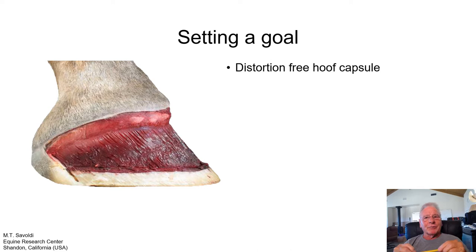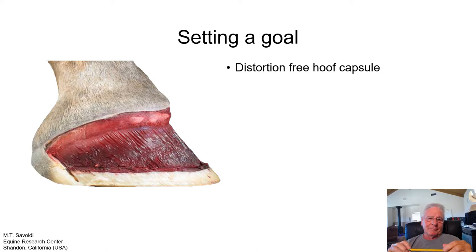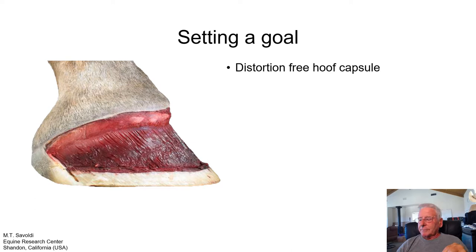It's always important to document and track everything you do. One of my key goals is a distortion-free capsule — that's something we are all trying to achieve. Once we recognize the influence the sole plane has on the hoof capsule in terms of distortion, it becomes easier to understand what's causing the distortion. That gives us a goal to work towards: to take an unlevel sole plane and make it level.